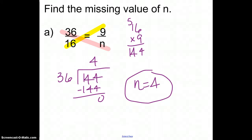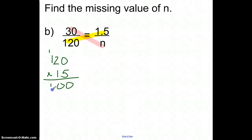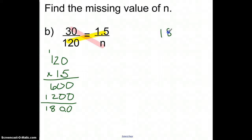We'll talk about cross-multiplying and dividing again in Chapter 5. In the next problem, same idea — I cross-multiply the two numbers I know: 120 times 1.5 equals 180 (adding one decimal place because 1.5 has one decimal place). Cross-multiplying must equal 180. I only know 30 in the other direction, so I take 180 and divide it by 30, which gives me 6. So n equals 6.